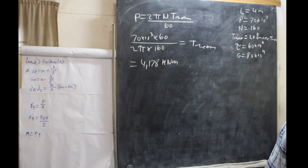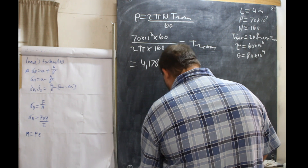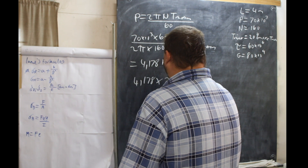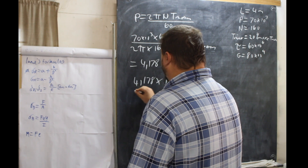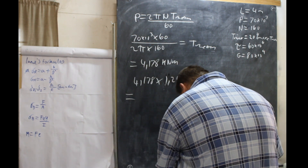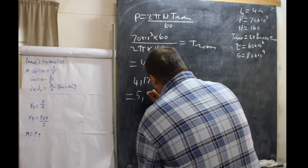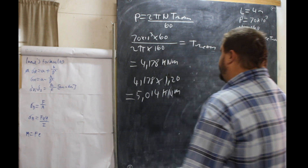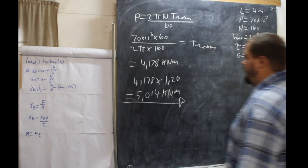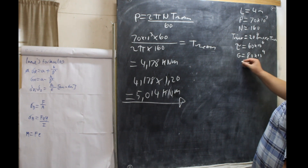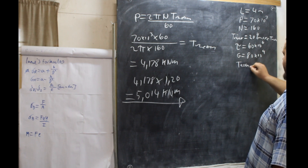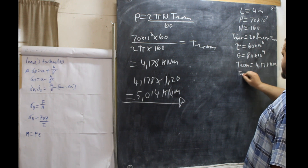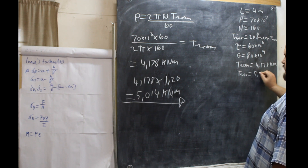Since T_max is 20% more than T_mean, we multiply: 4,178 × 1.20. That gives us 5,014 Nm. And that is our maximum torque. So our T_mean is 4,178 Nm and T_max is 5,014 Nm.